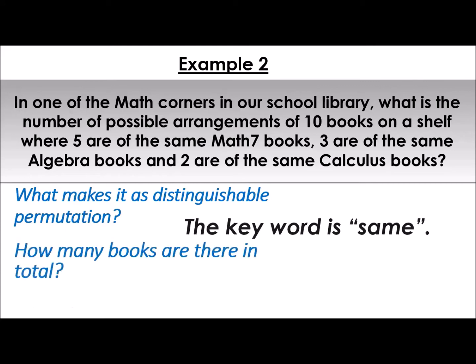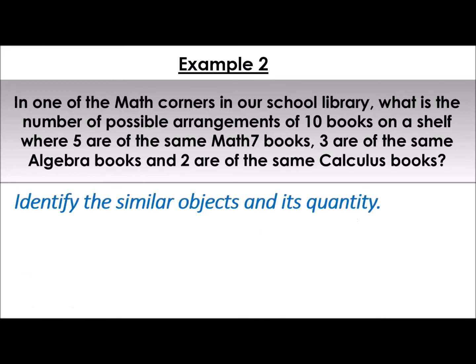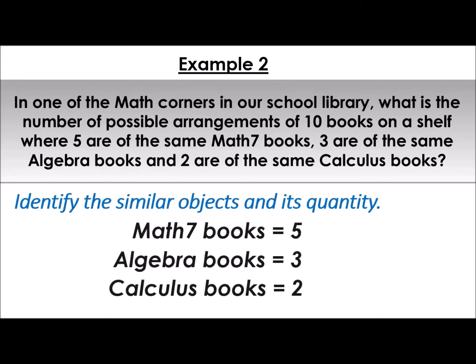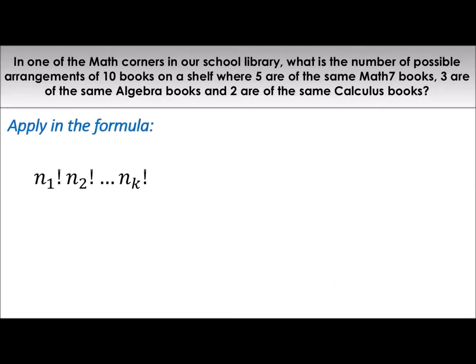How many books are there in total? There are 10 books in total — that gives us the value of n, which is 10. We identify the similar objects and their quantities: Math 7 books — 5, algebra — 3, calculus — 2, totaling n equals 10. Yung bawat category is our n-sub-1, n-sub-2, and n-sub-3. Applying the formula: 10 factorial all over 5 factorial times 3 factorial times 2 factorial.